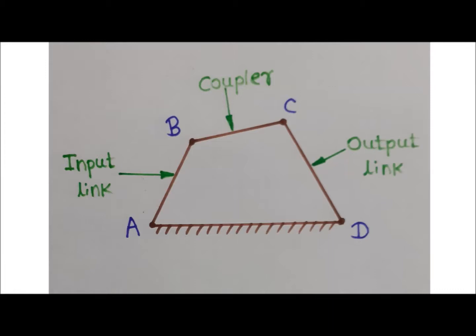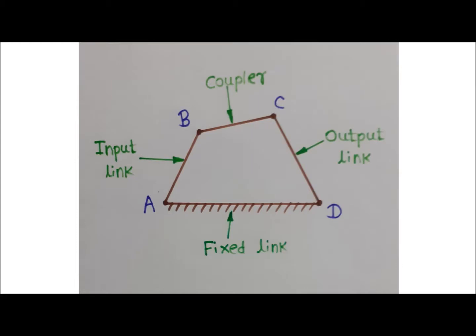Link AD is the fixed link — it is grounded and will not move. As link AB moves, it results in movement of the coupler, and due to that, the output link will also move.